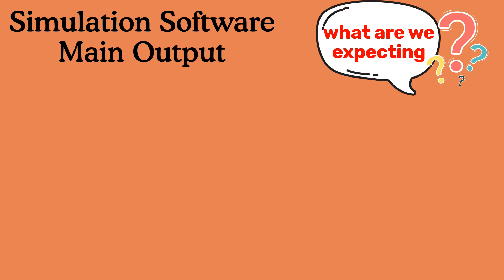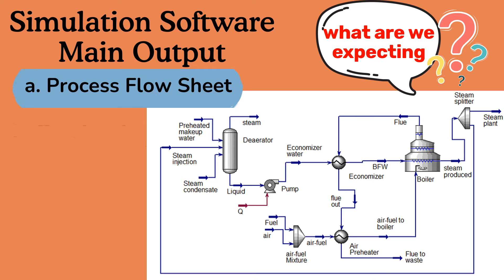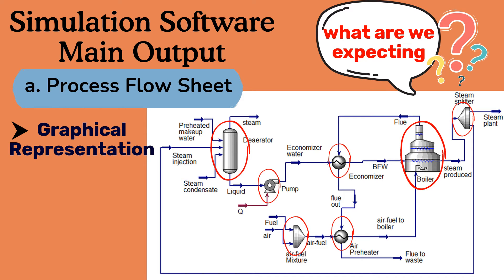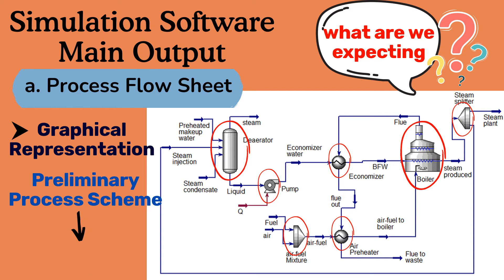Process simulation software packages generate several essential outputs. The process flow sheet is a graphical representation of the plant and its processes, illustrating the flow of materials and energy through the various unit operations. Through the flow sheet, we can see the equipment we need and the purpose of each one. We can also have a preliminary process scheme that shall be the base of the process flow diagram, PFD.